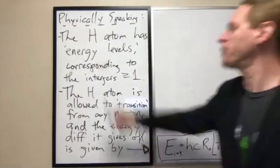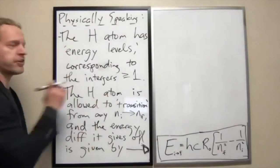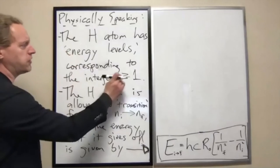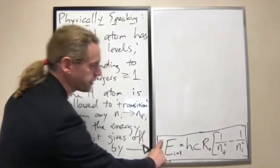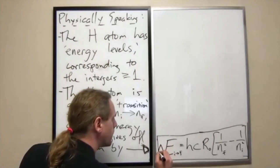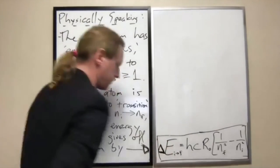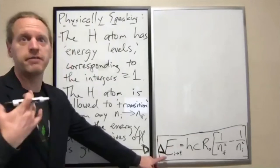Given these two statements here, if we have very specific energy levels corresponding to each integer, and if the amount of energy that we lose is given by exactly this formula, I do want to now change this to say delta E, because that's really what it is. It's a change in energy of the atom.